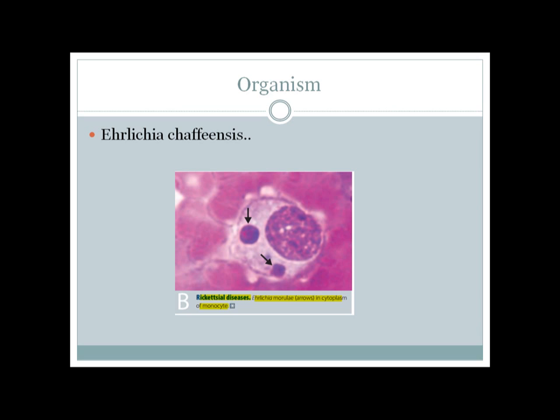Another organism in this group is Coxiella, which is not totally rickettsial but is kind of related to rickettsia. In this image, you can see a monocyte, and inside the monocyte you can see the morula of Ehrlichia.